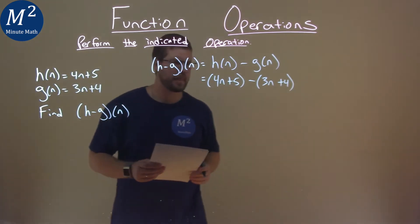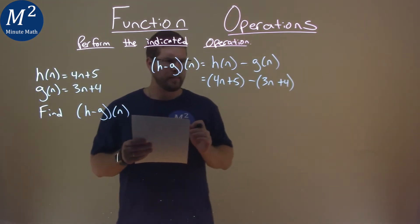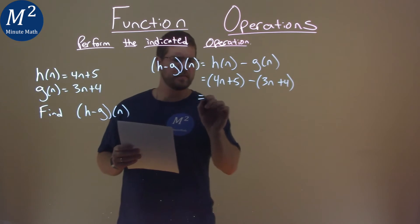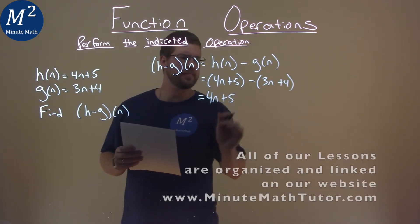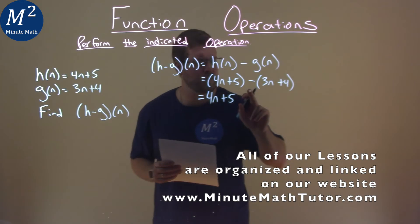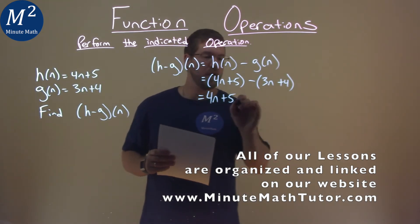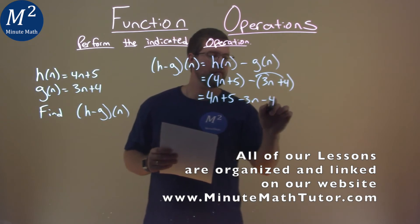All right, now this one's a little tricky. We need to make sure we follow our order of operations. Bring it down. 4n plus 5 here. But the minus sign gets distributed to both parts in the parentheses. So we have a minus 3n and then a minus 4.